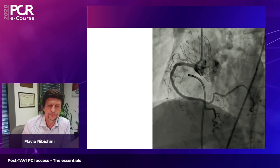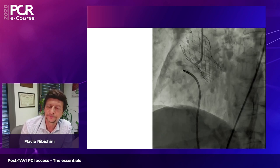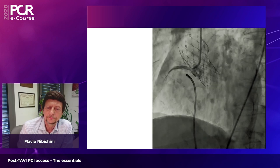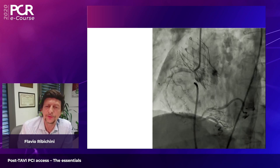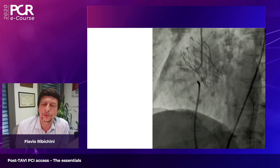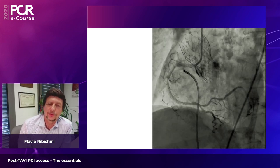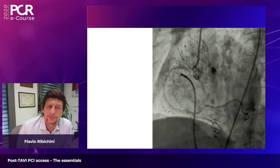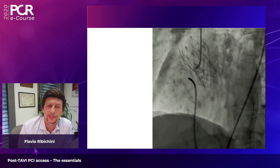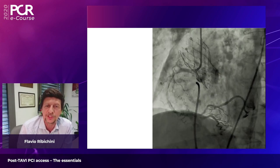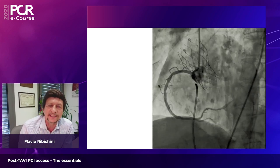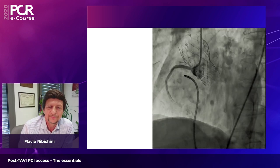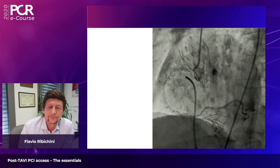If your standard wire to cross the frame is a pilot 50, and if you have difficulty with that, what is your escalation? The first thing you need is to get access to the coronary artery — you try with the wire you feel most comfortable with. Pilot 50 is my favorite wire but you may prefer other hydrophilic or non-hydrophilic wires. There is no magic wire; the good one is the one that gets distally into the artery.